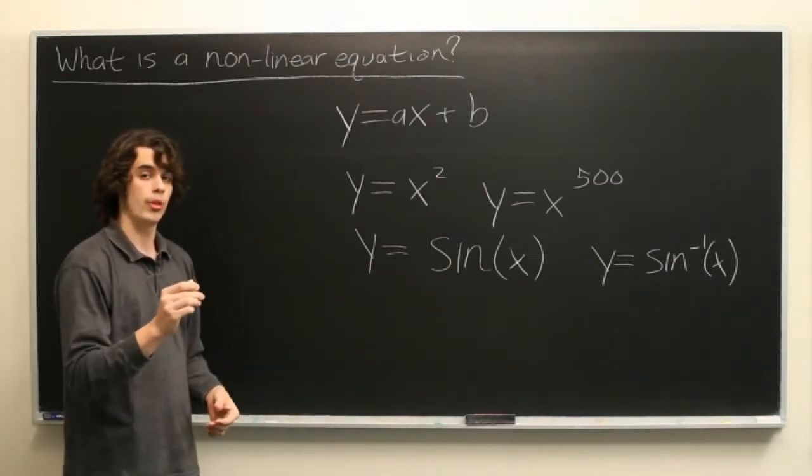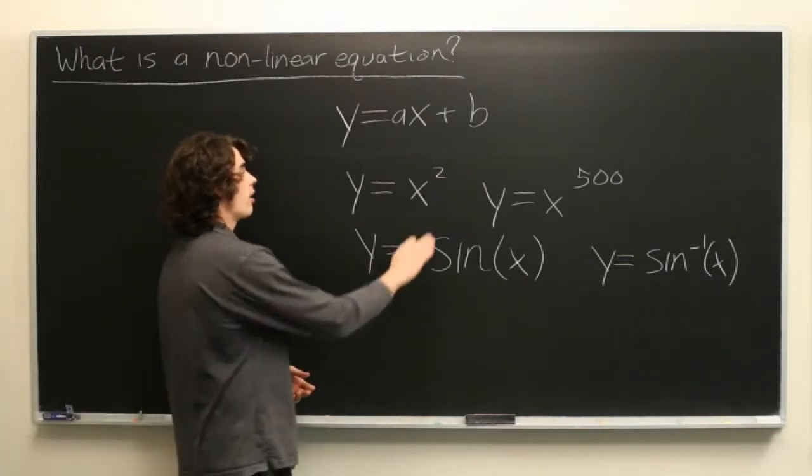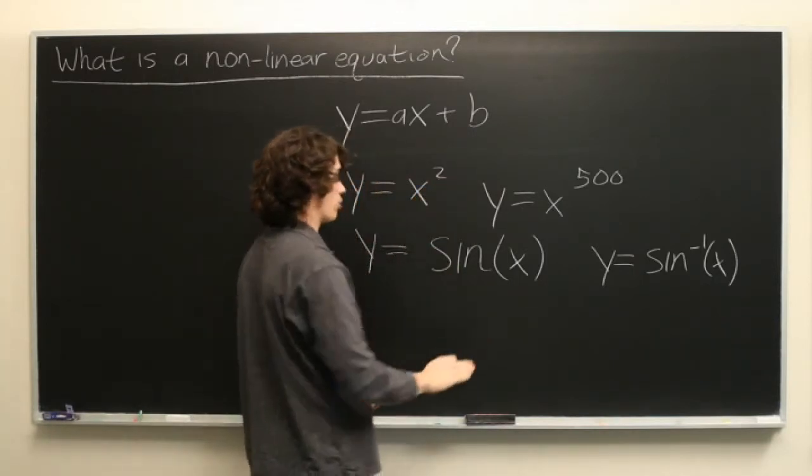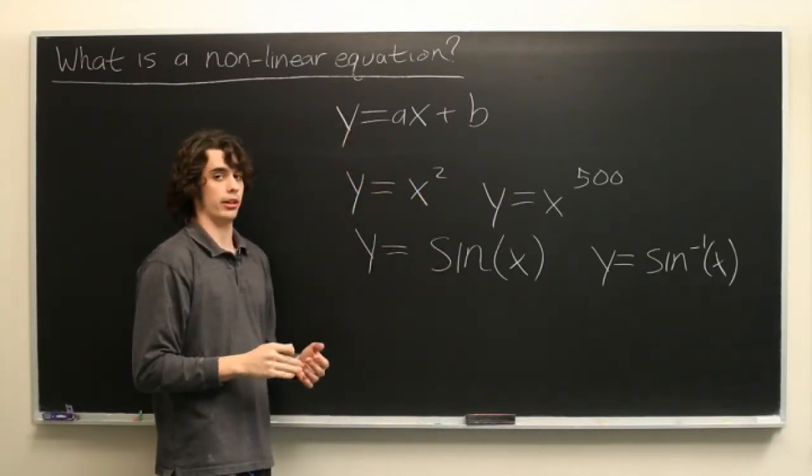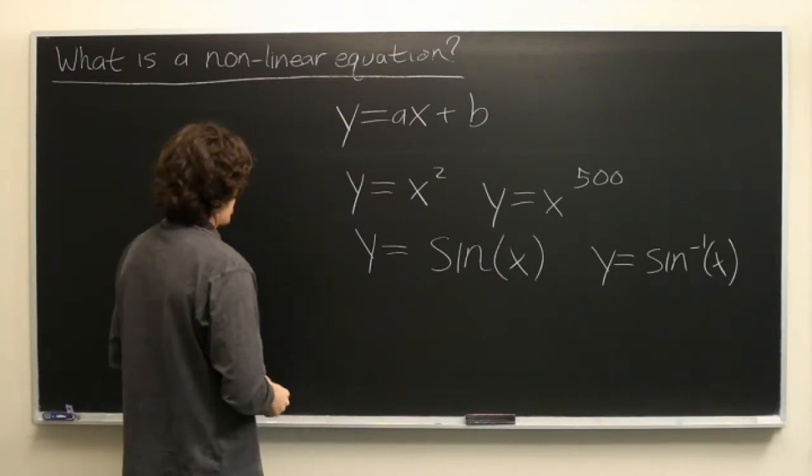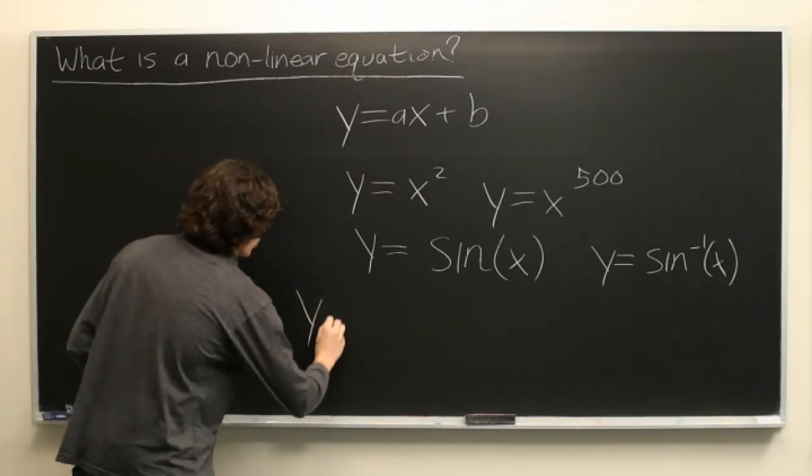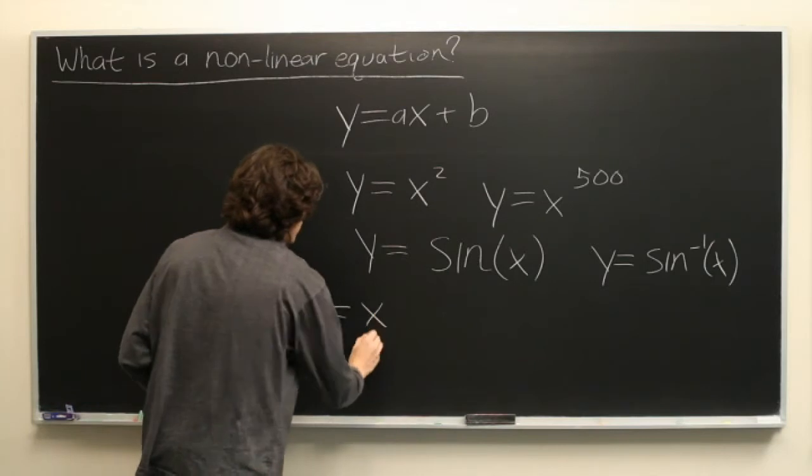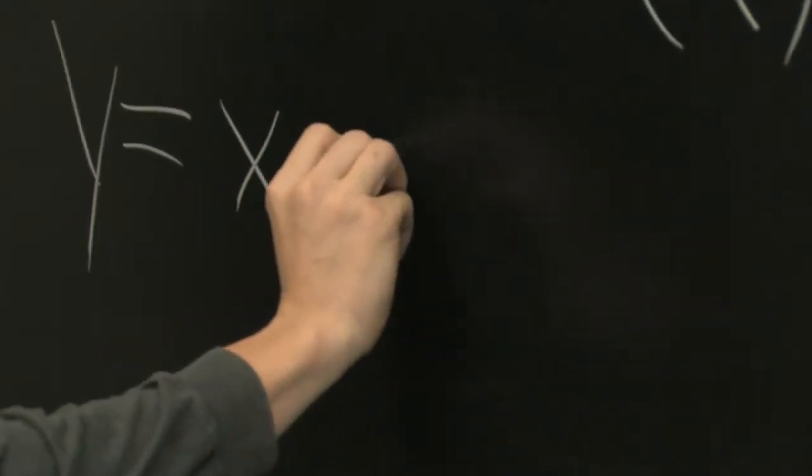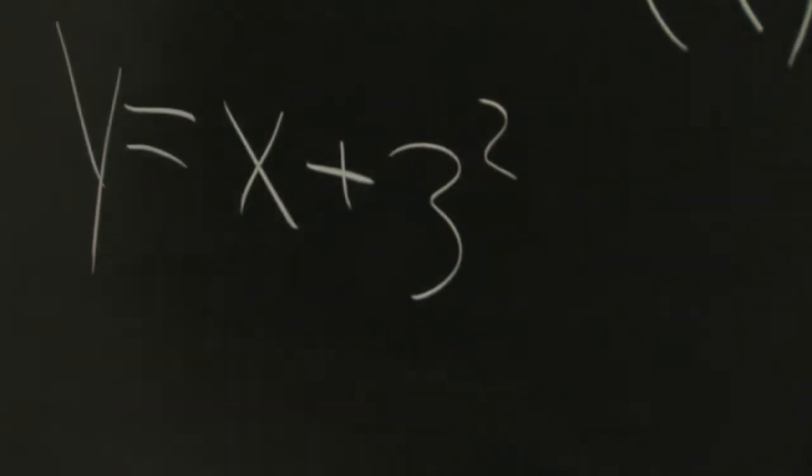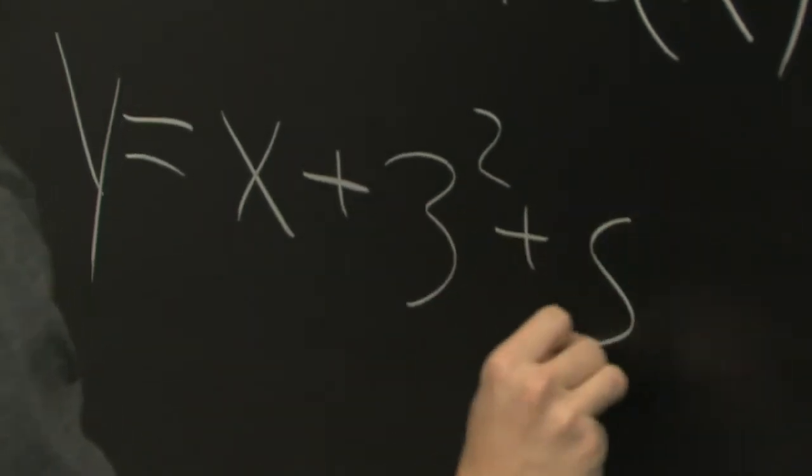However, this doesn't necessarily mean that the presence of an exponent or trigonometric function automatically makes something nonlinear. For example, let's say you have equation y equals x plus 3 squared plus the sine of pi.